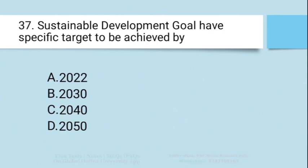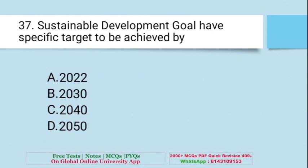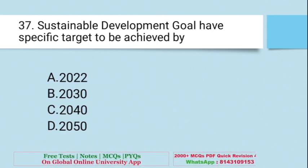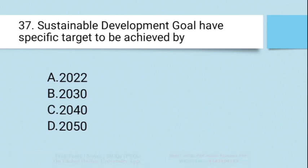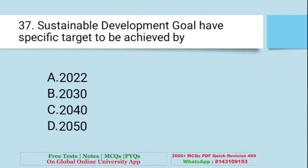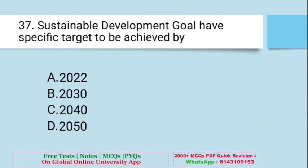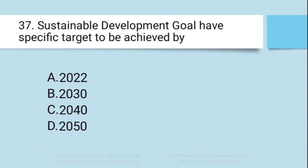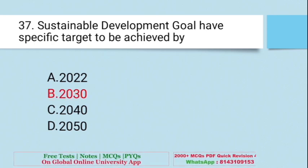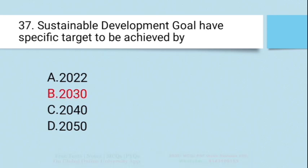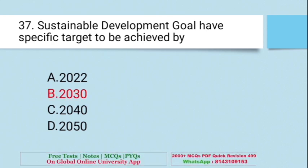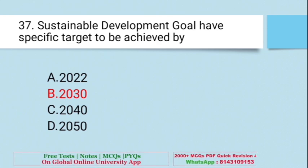Question: Sustainable Development Goals have a specific target to be achieved by — the right answer is 2030. This is the target year for Sustainable Development Goals.